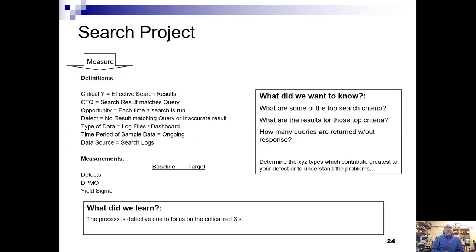For the measurement phase, the critical Y equals an effective search result. The CTQ — critical to quality — is that the search result matches the query. An opportunity is each time a search is run. A defect equals no result matching the query or an inaccurate result. The type of data are the log files. The time period was six months, and the data source is the search logs. Key questions include: what are the top search criteria, what are the results for those criteria, how many queries are returned without a response, what did we learn, and we want to focus on the critical X's.